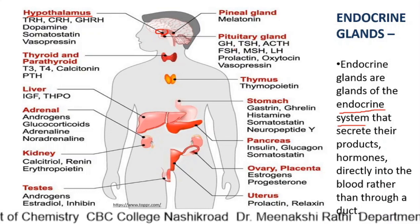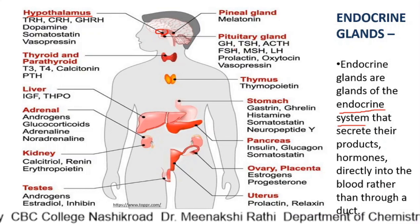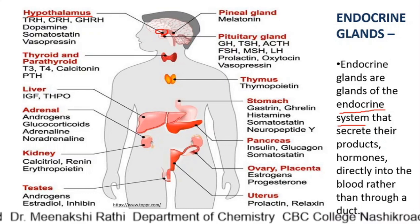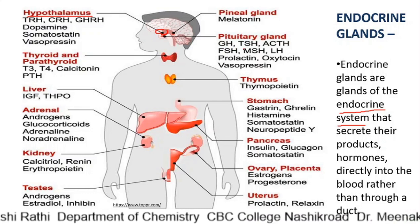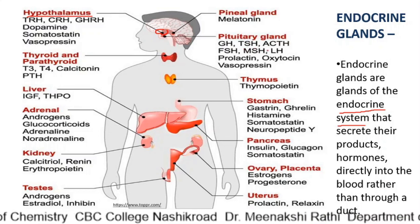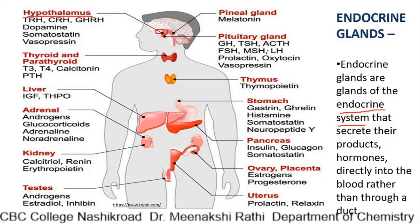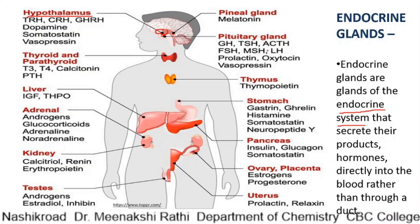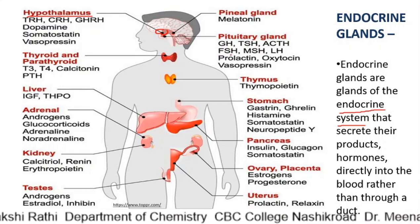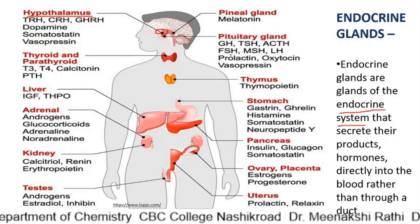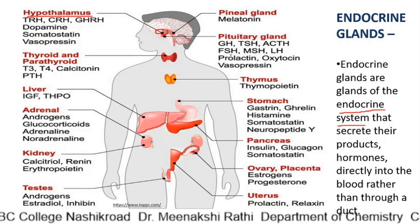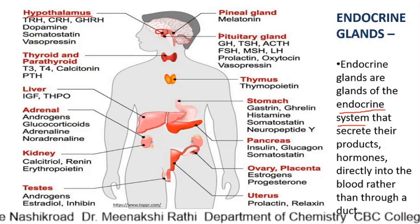The anterior pituitary releases GH (growth hormone), TSH (thyroid stimulating hormone), ACTH (adrenocorticotropic hormone), FSH (follicle stimulating hormone), LH (luteinizing hormone), prolactin, oxytocin, and vasopressin.